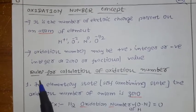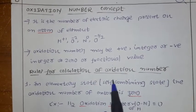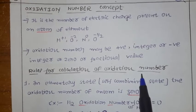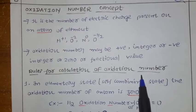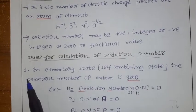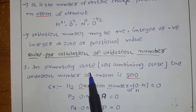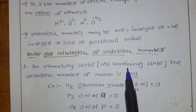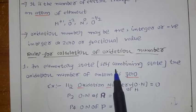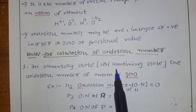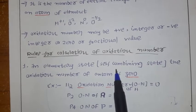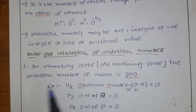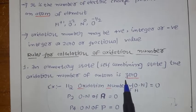Now here we have the rules for calculation of oxidation number — these are very, very important. You have to remember all the rules. Let us discuss the rules one by one. The first rule is: in elementary state, meaning self-combining state, where all atoms of similar type combine, the oxidation number of an atom is 0.